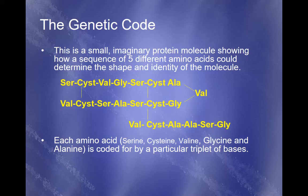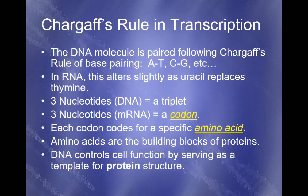Each amino acid — whether serine, cysteine, valine, glycine, or alanine — is coded for by a very specific group of bases, based on what's known as Chargaff's rule. According to Chargaff's rule, A binds to T and C binds to G — that's the only way it works in DNA. We're going to use a modified version to base pair the RNA, with the same combinations but thymine replaced by uracil. We're still reading in groups of three — from a DNA triplet to an RNA triplet known as a codon. Each codon codes for a very specific amino acid, which you can see on your codon wheel.